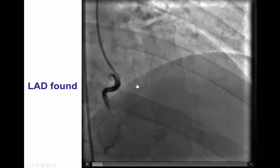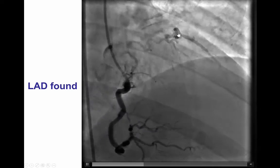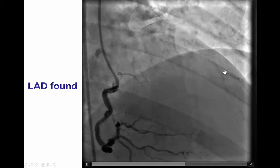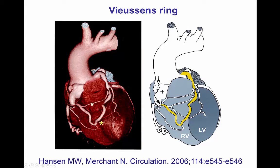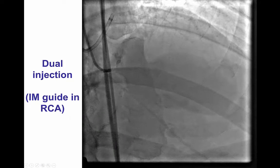This is essentially a vieussens collateral that goes from a conus branch all the way to the LAD. And this is another example of that — a proximal LAD collateral coursing over the RV and then supplying the left anterior descending artery. This is a good collateral to know because it originates proximally in the right coronary artery or can even originate separately from the aorta, and sometimes it may not be visualized during right coronary injections, as was the case in our patient.